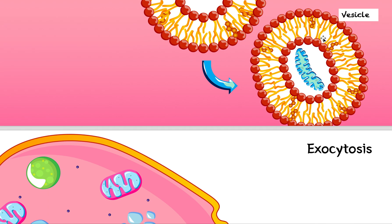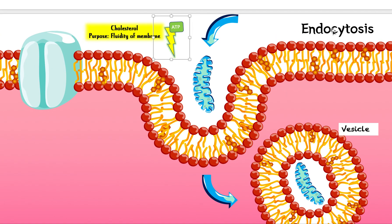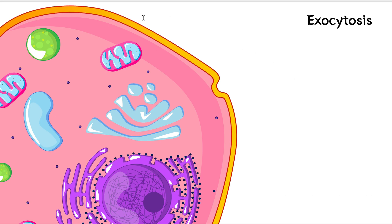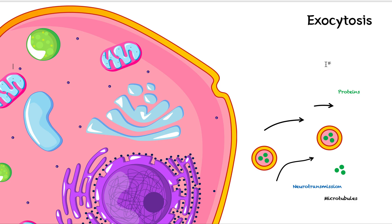Now let's finish off with exocytosis. "Exo" means out of — kind of like "exit" the cell. So exocytosis is basically the exact opposite of endocytosis: endocytosis brings things into the cell forming a vesicle, while exocytosis is the reverse. We're now looking at the full cell rather than just the membrane, because it's important for this explanation.